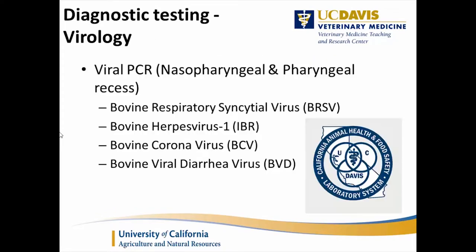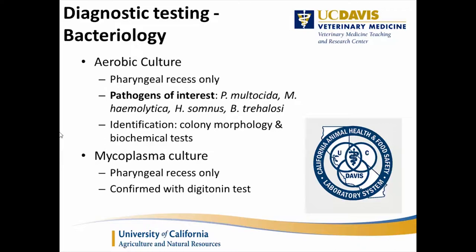For viral PCR, we tested for BRSV, IBR, bovine coronavirus, and BVD, using both the nasopharyngeal and pharyngeal recess samples. For bacteriology, we only used the pharyngeal recess because it was guarded, to prevent contamination from commensals in the nares. We looked for Pasteurella multocida, Mannheimia haemolytica, Haemophilus somnus, and B. trehalosi; identification was based on colony morphology and biochemical tests. For mycoplasma culture, we used the pharyngeal recess only, confirmed using the digitonin test.